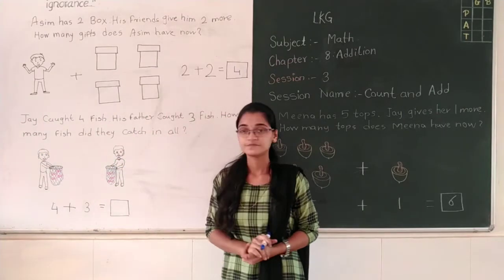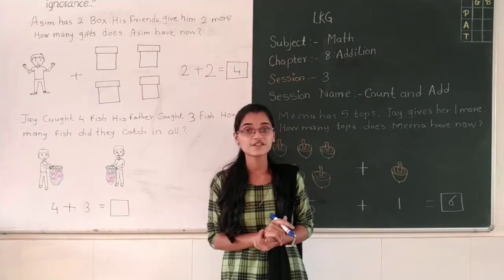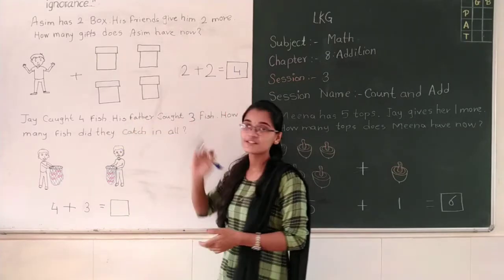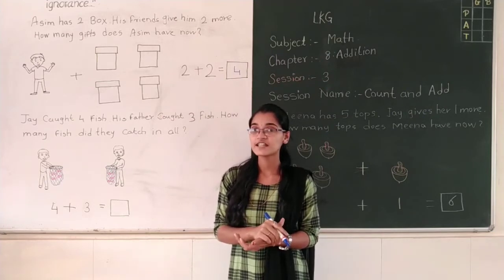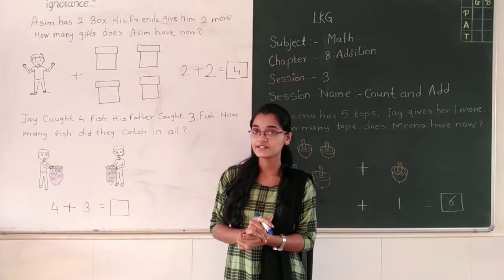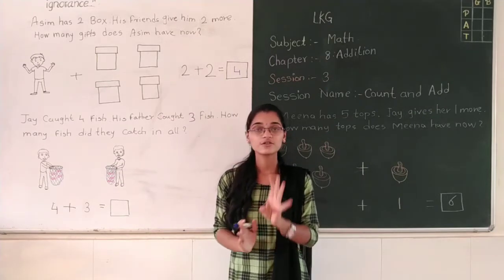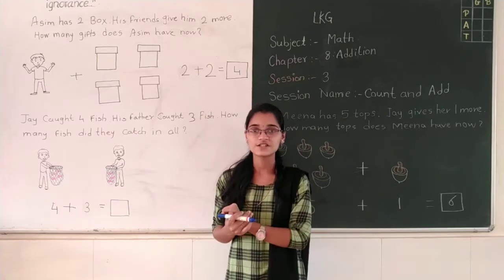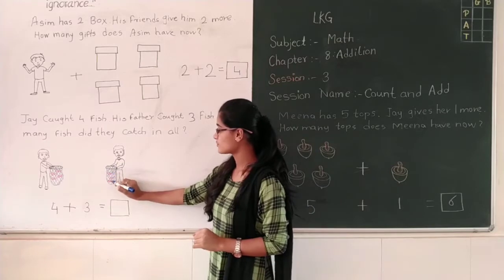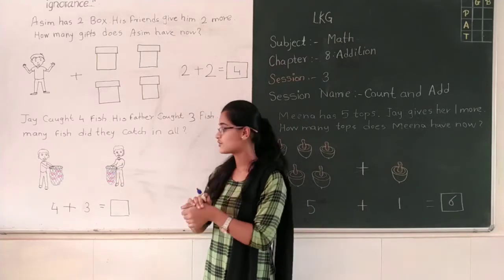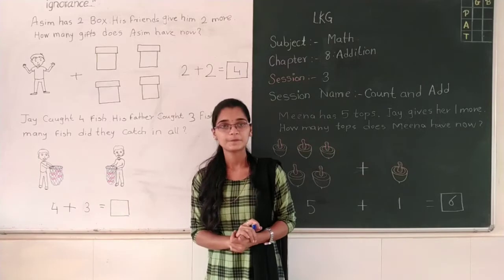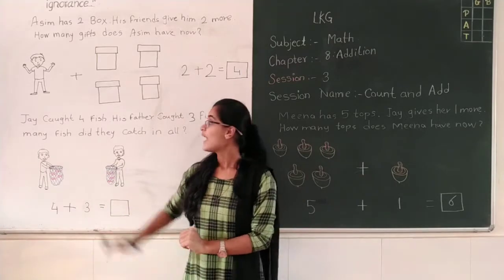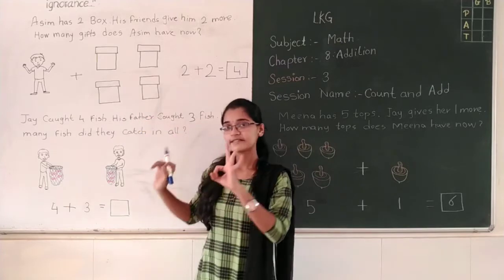Jai got 4 fishes and his father got 3 fishes. His father got how many fishes? 3. Right. Jai got four fishes and his father got three fishes. That's why I have written the number three here. So Jai got four fishes and his father got three fishes.